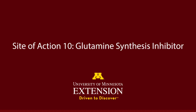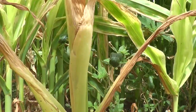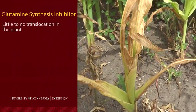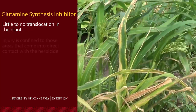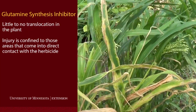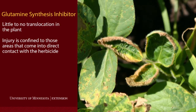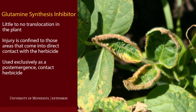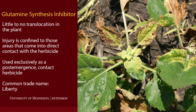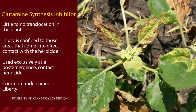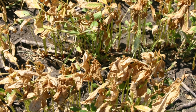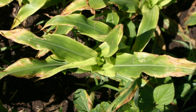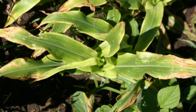Site of action number ten herbicides inhibit a critical step in nitrogen metabolism in the plant. The herbicide inhibits a specific biochemical site involved in the conversion of ammonia to nitrate in the plant. Affected leaves become yellow and then move to necrosis. In grass plants, you'll see yellow striping in the plant leaves before they become necrotic and die.